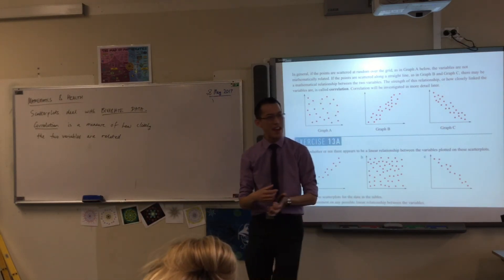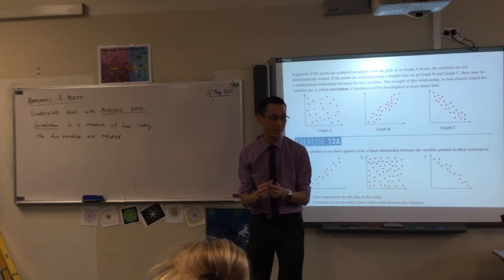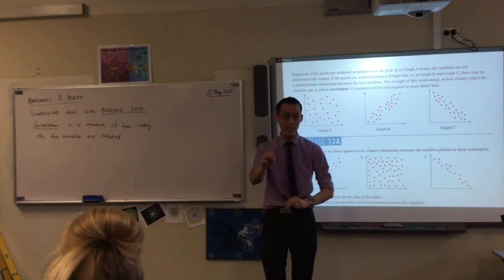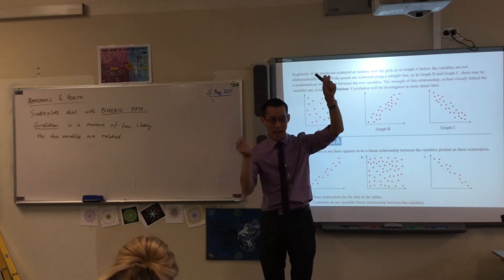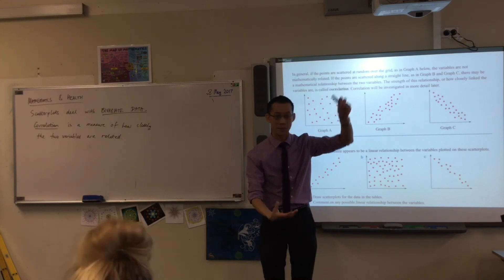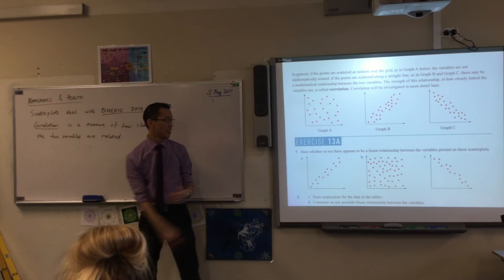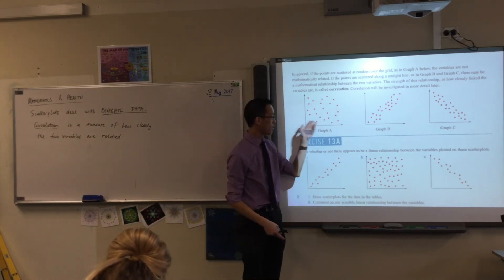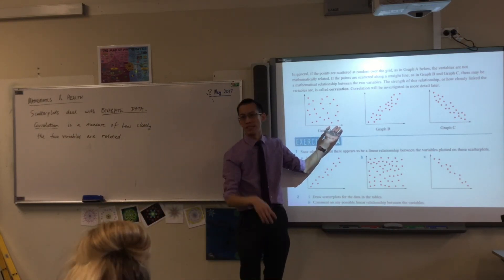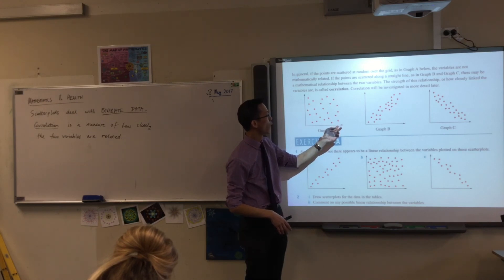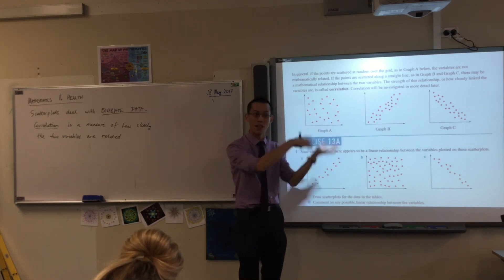So if a set of bivariate data has high correlation, that means if you're one thing, you're going to be another, like guaranteed, I have a great deal of certainty about it. Whereas if things have very low correlation, it's like, you know what? You can tell me this piece of information and I have no idea really about what you're going to be in the other variable.